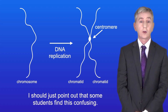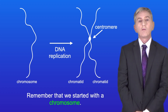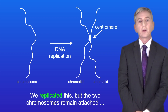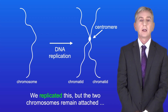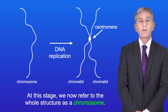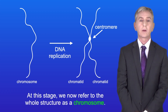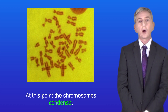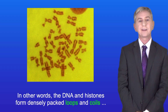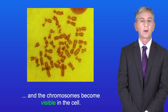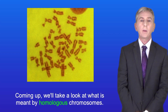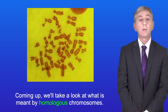Some students find this confusing. Remember that we started with a chromosome, replicated it, but the two chromosomes remain attached and are now referred to as chromatids. At this stage we refer to the whole structure as a chromosome. At this point the chromosomes condense — the DNA in histones forms densely packed loops and coils, and the chromosomes become visible in the cell. Coming up we'll take a look at what's meant by homologous chromosomes.